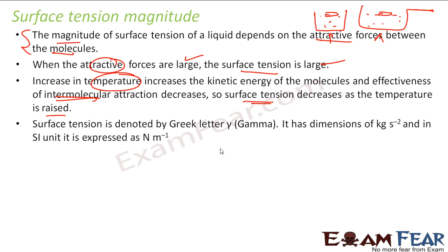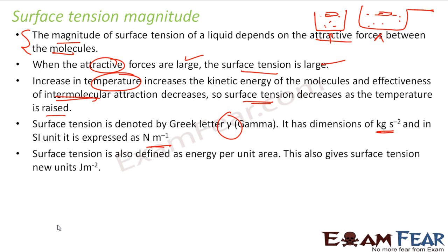Surface tension is denoted by the Greek letter gamma. It has dimensions of kg per second squared, and in SI units it is called Newton per meter. Surface tension is also defined as energy per unit area, and with this you get a new unit: joule per meter square. So surface tension is either force per unit length or energy per unit area — both are surface tension.